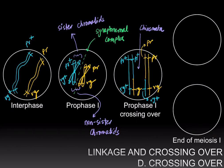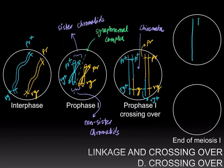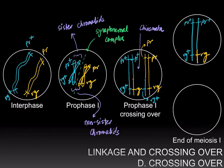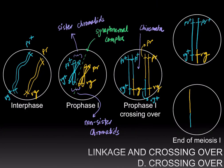During meiosis I, the non-sister chromatids are going to segregate, giving us one daughter cell that has purple-plus vestigial-plus and purple-plus vestigial. The other daughter cell is going to have purple vestigial-plus — a recombinant genotype — and the parental genotype purple vestigial.